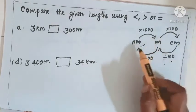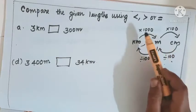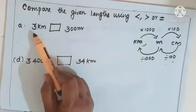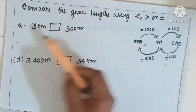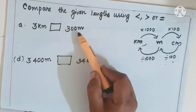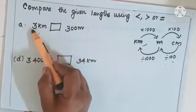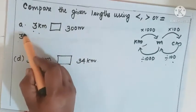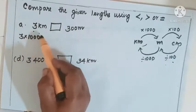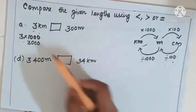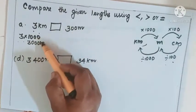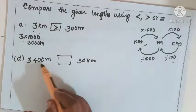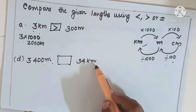So if you want to convert kilometer into meter, multiply by thousand. Now think: which is greater — 3 kilometer or 300 meter? Kilometer is bigger. So you convert 3 kilometers: 3 into thousand equals 3000 meters. Here 300 meter versus 3000 meter — automatically 3 kilometers is greater.